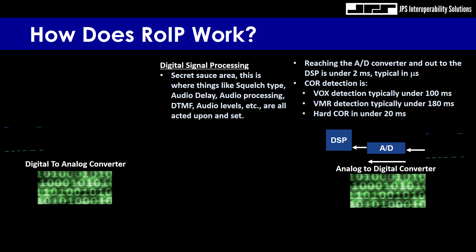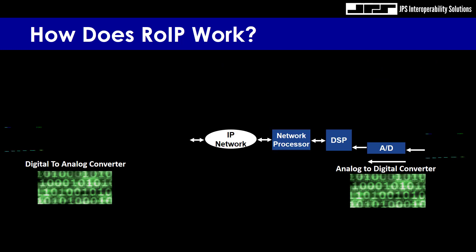Reaching the A-D converter and out to the DSP is under 2 milliseconds, typically in microseconds. COR detection in the DSP for VOX takes approximately 100 milliseconds. For VMR — voice modulation recognition detection — it's typically under 180 milliseconds, and for hardware COR it's typically under 20 milliseconds. From the DSP, it goes to the network processor, which handles the IP network. The signal then travels to the network processor on another JPS device, into its DSP, then to the digital-to-analog converter, and back to voice.